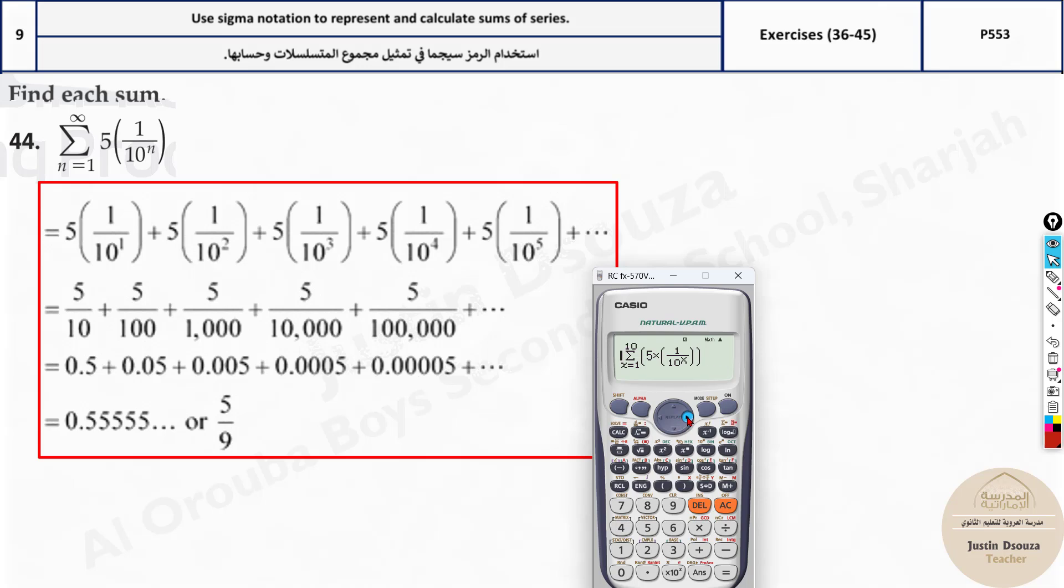You can see it's coming towards 0.55, that is 5 by 9 itself. Then you can just slowly change it, say to 20. Whenever you get a fraction, that's your answer. You can compare which is the correct option and easily choose the correct answer.